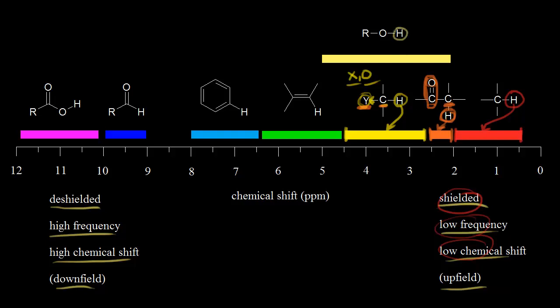Let's look at the proton on an alcohol. Alcohols have hydrogen bonding, and hydrogen bonding has a deshielding effect — increased hydrogen bonding means increased deshielding. The problem is the amount of hydrogen bonding depends on concentration and temperature. Since those things can vary, you get different amounts of deshielding and therefore a pretty broad range for the possible signal — approximately 2 to 5 parts per million for the proton on an alcohol, though it might not even stay within that range.